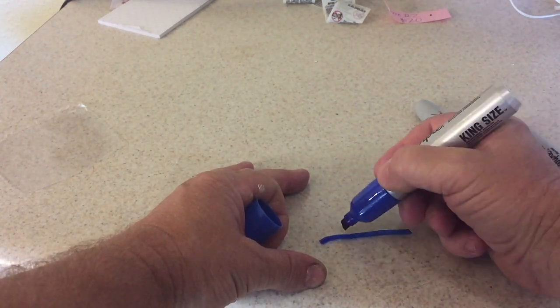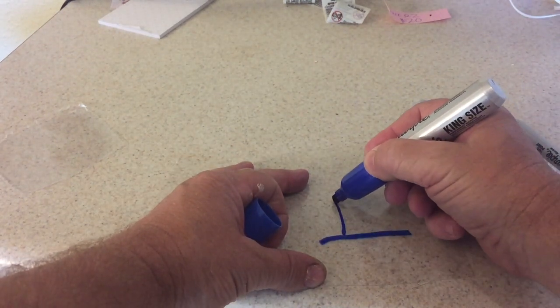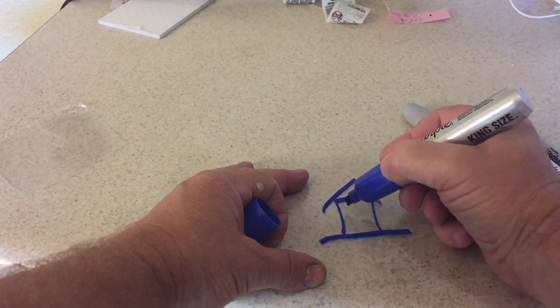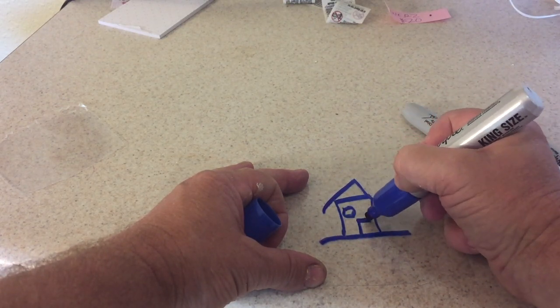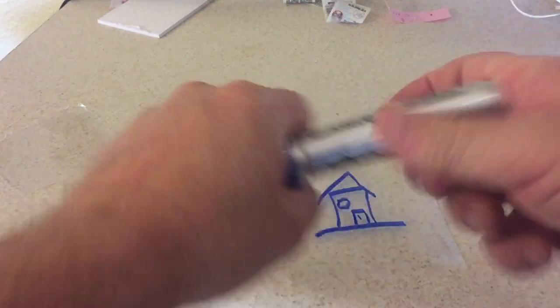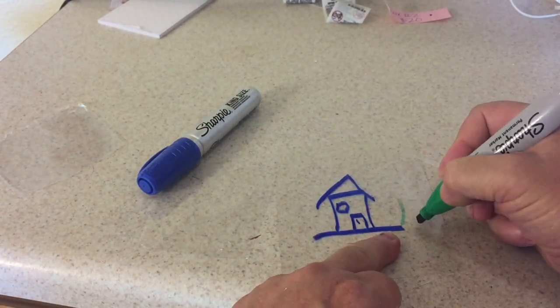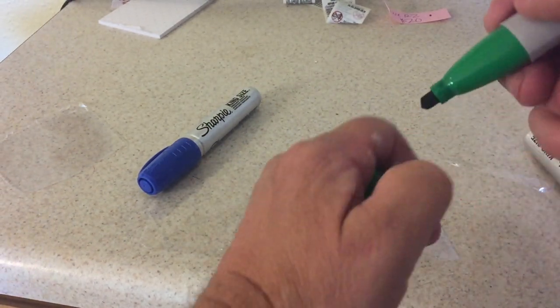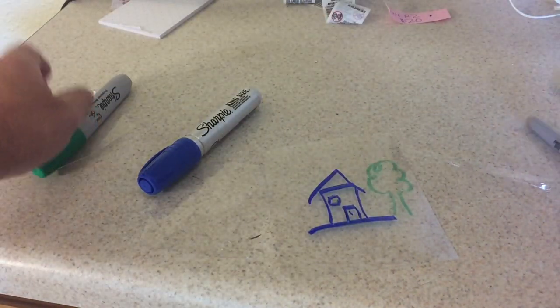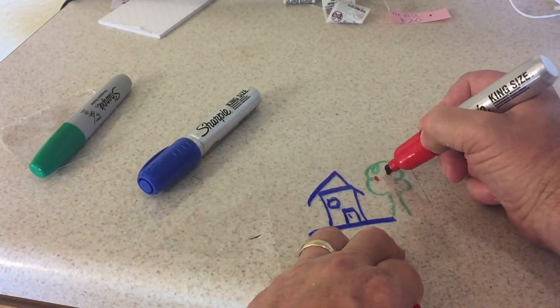Now you guys get to see my artistic skills. That's why I don't have a drawing channel, I have a science channel. So I will attempt to make three drawings for you, and you want to use permanent marker. I'm going to make a little house here, not to be confused with my house because I do not have an apple tree. But I'm going to make an apple tree here.